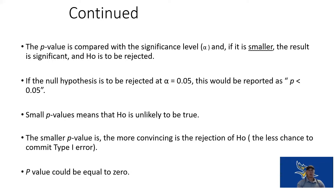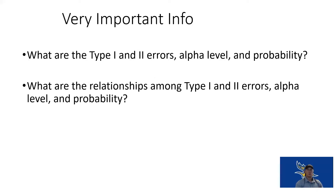The P value could also equal 0, meaning there is no chance of error — we are completely confident. For review, make sure you can answer: What is a type one error? What is a type two error? What is the alpha level and what does it mean? What do we set it at in kinesiology research? And what is the P value? Be able to describe them and how they coordinate with each other — this will likely be a question on your exam requiring you to compare, contrast, and define these terms.